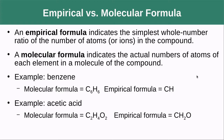Empirical versus molecular formula: the empirical formula indicates the simplest whole-number ratio of atoms or ions in a compound, whereas a molecular formula indicates the actual numbers of atoms of each element in a molecule. For benzene (C6H6), we divide both subscripts by six to get the empirical formula CH.